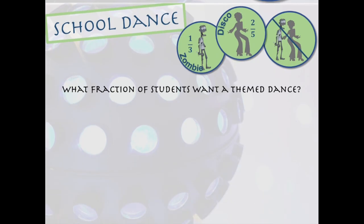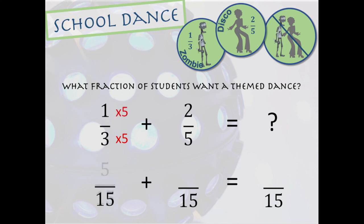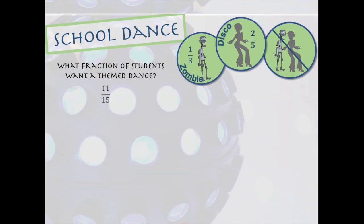Let's just take the first question. What fraction of students want a themed dance? Well, we know that one-third want zombies, and two-fifths want disco. So if we add those together, we'll get the total students who do want a theme of some sort. We can do this. The least common multiple of three and five is fifteen. Three times five is fifteen, so we multiply the one by five also, and the first fraction becomes five-fifteenths. Now the next one. Five times three is fifteen, so we multiply two times three, and we get six-fifteenths. Add them together, and we have eleven-fifteenths. And we've answered the first question. Eleven-fifteenths of students do want a themed dance.